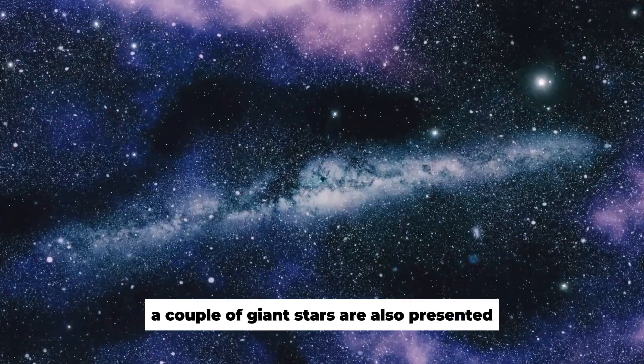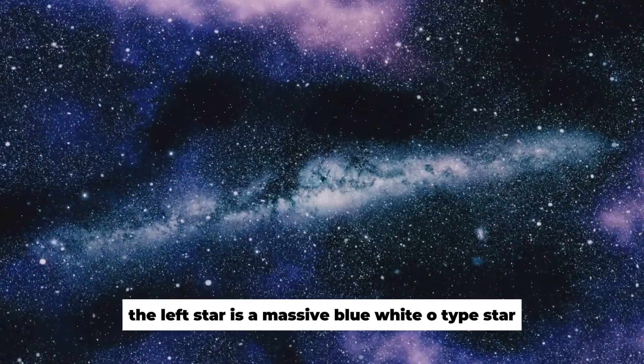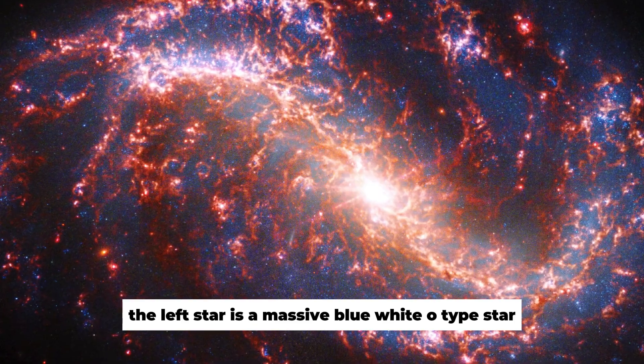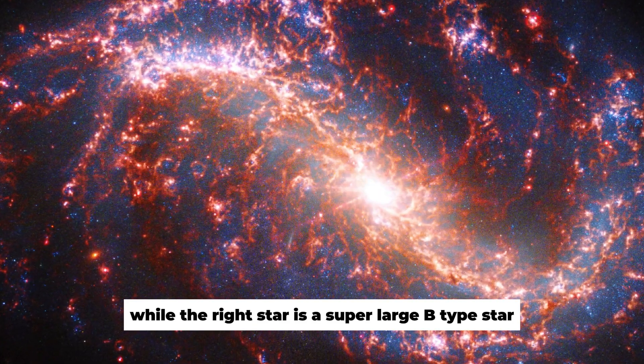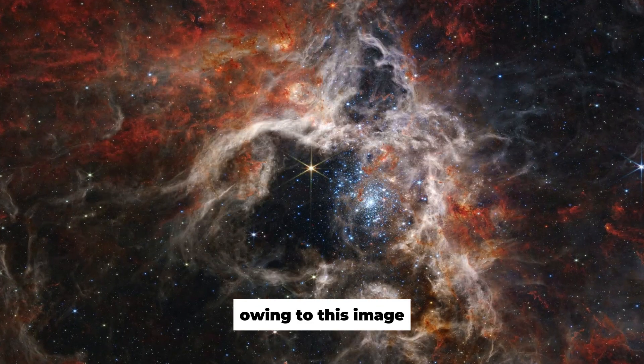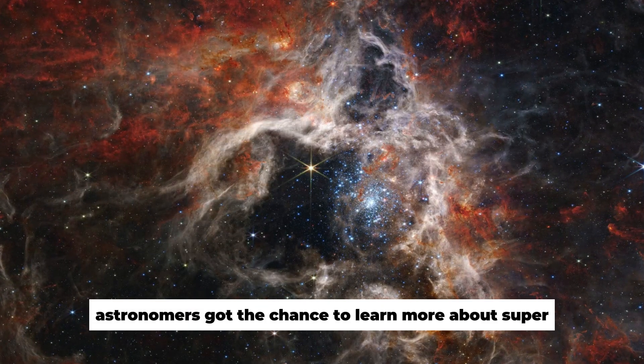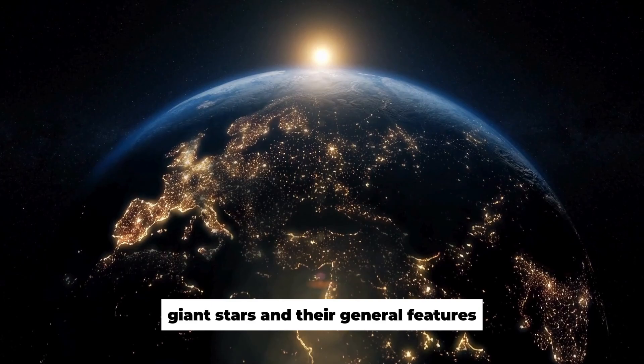A couple of giant stars are also presented in this picture. The left star is a massive blue-white O-type star, while the right star is a super-large B-type star. Owing to this image, astronomers got the chance to learn more about supergiant stars and their general features.